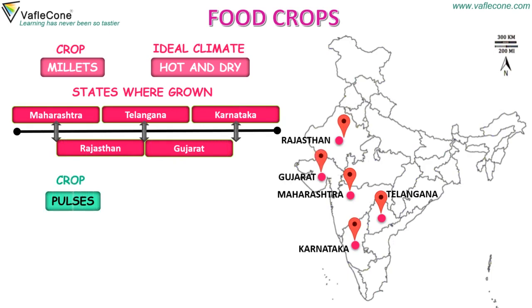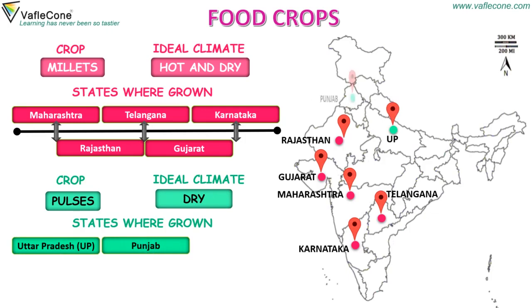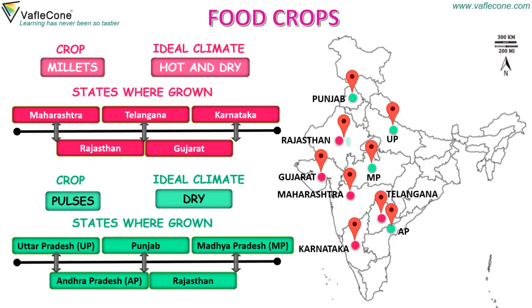Pulses: ideal climate is dry. States where pulses are grown are Uttar Pradesh, Punjab, Madhya Pradesh, Andhra Pradesh and Rajasthan.